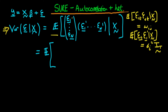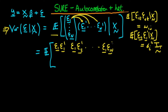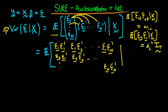The first component is just ε₁ times ε₁ prime. The second component is ε₁ times ε₂ prime, and going all the way to the right in the first row, that's ε₁ times εₙ prime. Moving down to the next row, we have ε₂ times ε₁ prime, then ε₂ times ε₂ prime. Filling out the rest of the matrix similarly, the last component is εₙ times εₙ prime, all conditional on the matrix of independent variables X.